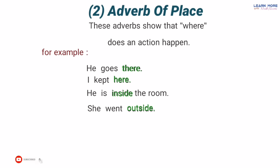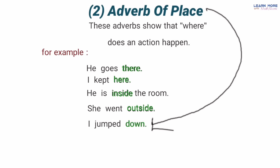'Where did you jump?' — aap ne kahan jump lagaya tha? 'I jumped down' — maine neeche jump lagaya tha. Ab 'down' bhi ek adverb of place hai kyunke yeh mere kaam jo maine kiya tha — jump lagaya tha — uski jagah ke baare mein bata raha hai ke kahan lagaya tha: down, neeche. Toh aap ne dekha ke yeh adverbs humein verbs ki place ke baare mein batate hain ke koi kaam kahan hota hai — where does an action happen. Very simple.